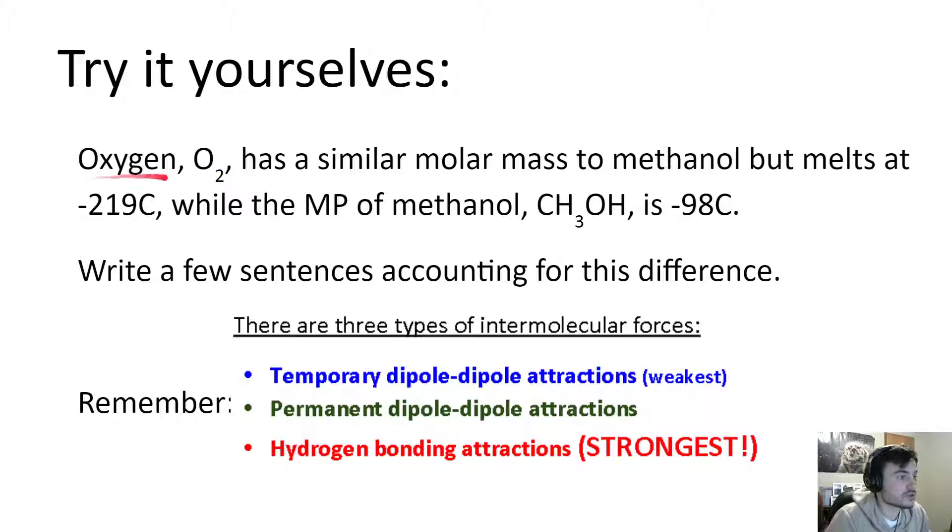So oxygen, O2, has a similar molar mass to methanol, but melts at negative 219 degrees Celsius. While the melting point of methanol is negative 96. Write a few sentences accounting for this difference.